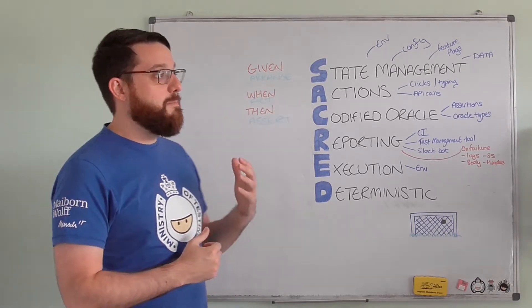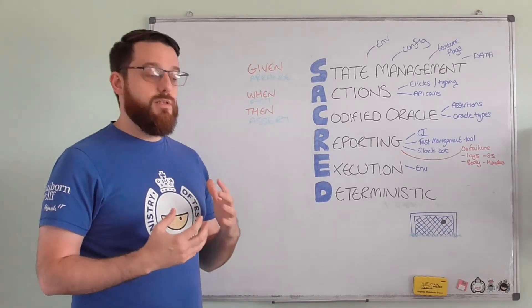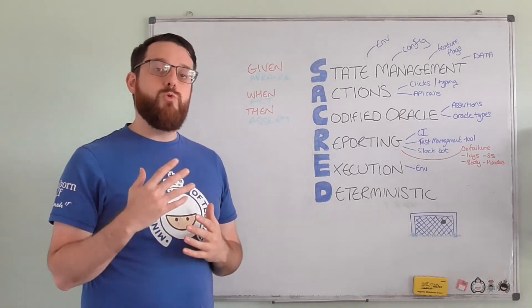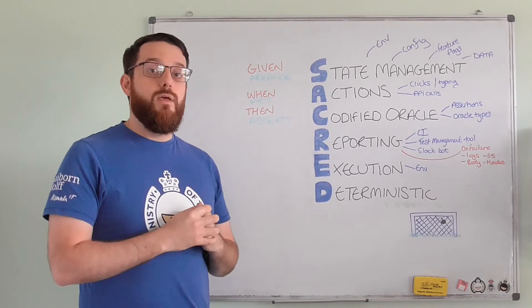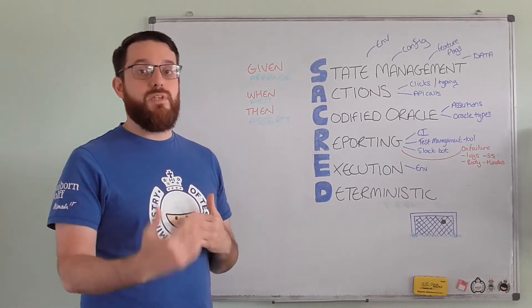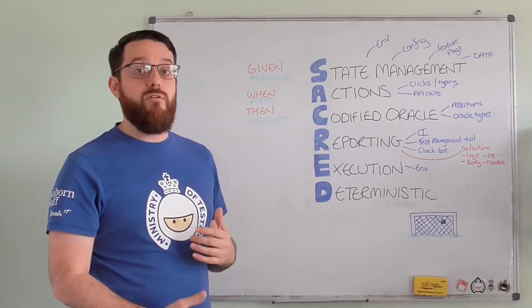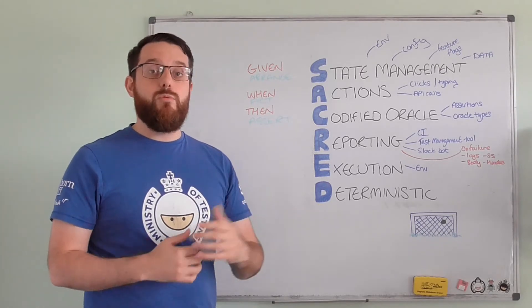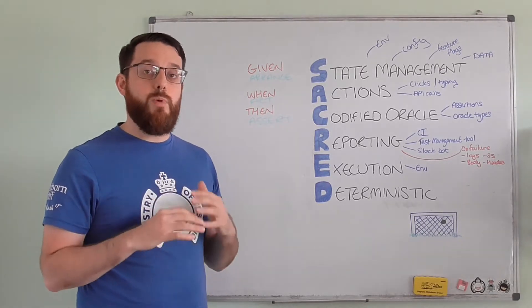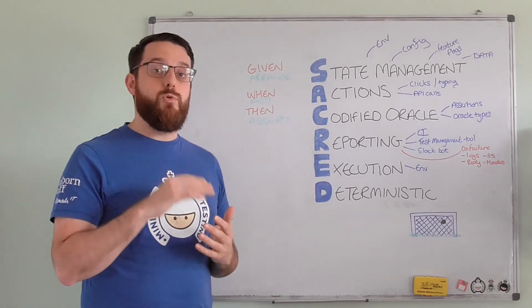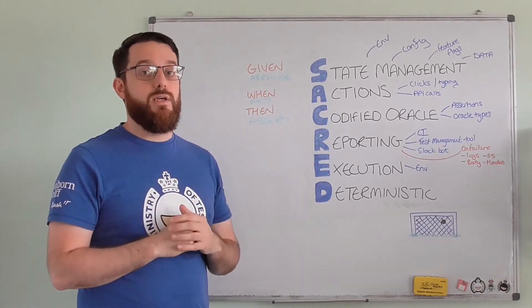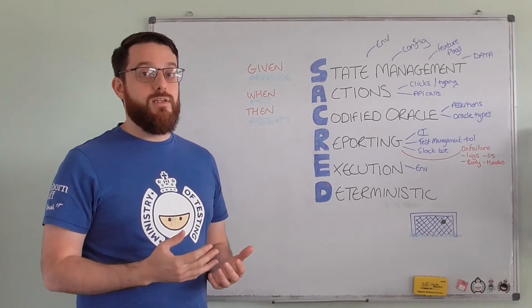The S stands for State Management, and to me this is one of the most important things you can automate. I'm talking here about setting up data, all the different variations of data you need, deploying an environment, configuring it, setting up config flags. These are a huge part of having stable, reliable automated checks, and you don't get that by learning Selenium.